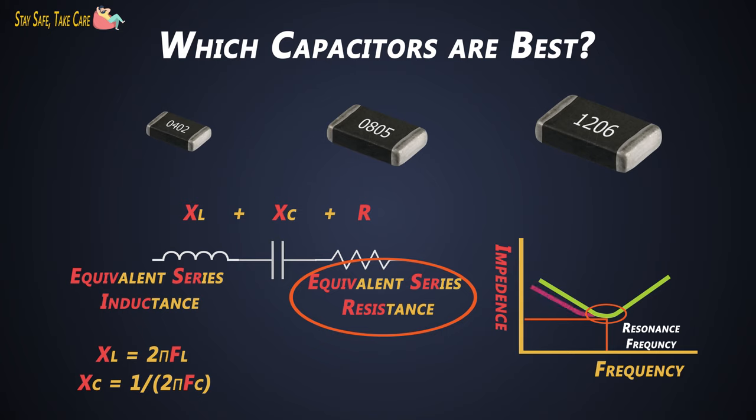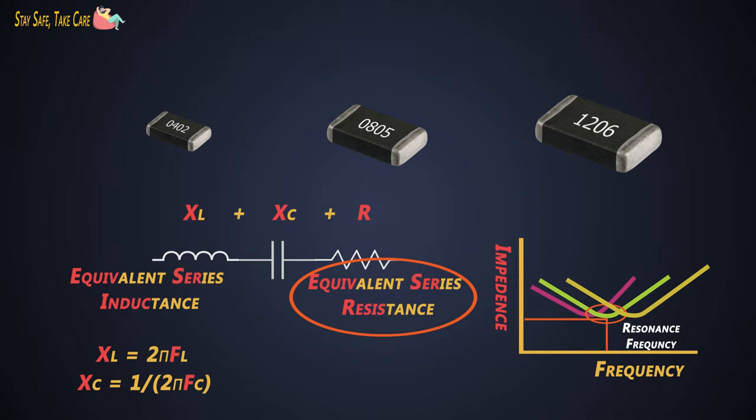This resonance frequency can differ for different packages of the same capacitor value. That is why engineers typically place capacitors of different sizes and different values in parallel. You should select the capacitor that will have the lowest impedance at the frequency of the noise. It is a tedious process, but it gives precise noise suppression from the decoupling capacitor.